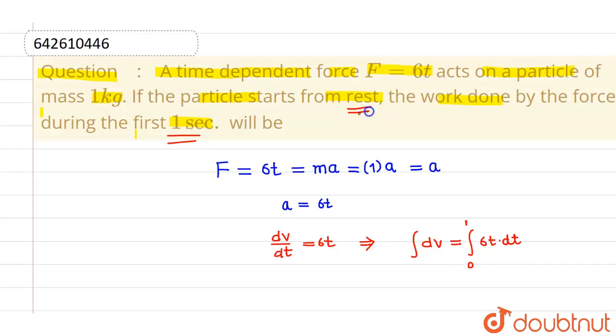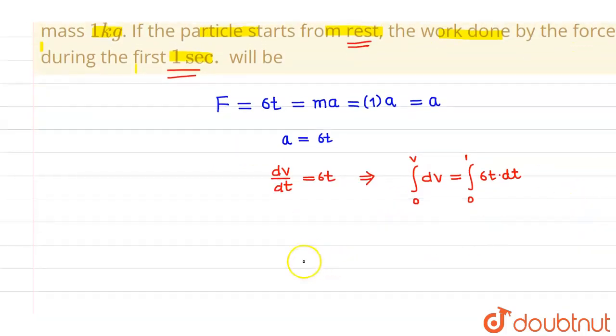And the particle starts from rest, that's why I am taking initial velocity as 0 and velocity at time 1 second as v. So this v will come out to be 6t squared by 2, limit from 0 to 1, and this will be equals to 3 meter per second.